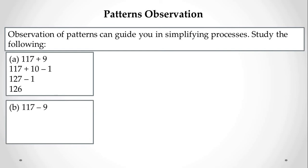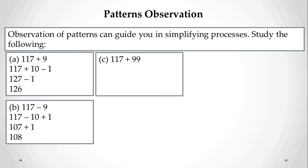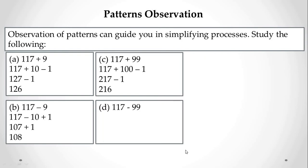Next example: 117 minus 9. Write 9 as 10 minus 1, so minus 9 is minus 10 plus 1. Subtract 10 from 117 to get 107, then add 1 to get 108. For 117 + 99: write 99 as 100 minus 1. Add 100 to 117 to get 217, then subtract 1 to get 216. For 117 minus 99: write it as minus 100 plus 1. Subtract 100 from 117 to get 17, then add 1 to get 18. Convert numbers to the nearest ten or hundred to make calculation easy.